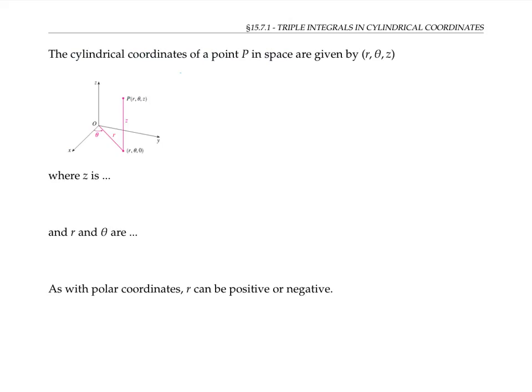The cylindrical coordinates of a point P in space are given by three numbers, r, theta, and z, where z represents the height of the point above the xy plane.